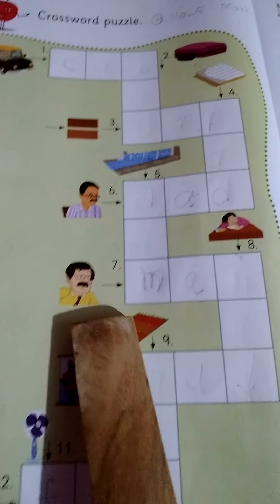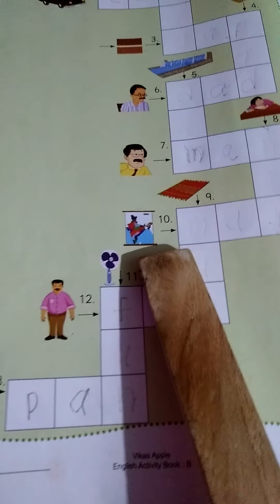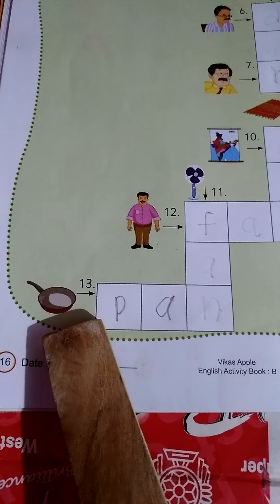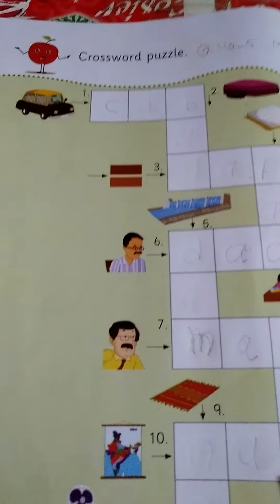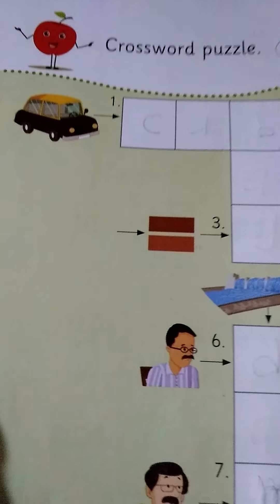This is man. This is mat. This is map. This is fan. This is fat. And this is pen. This is magic word. We call magic word.